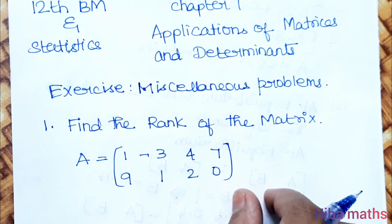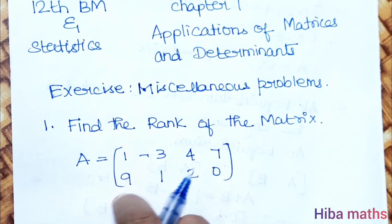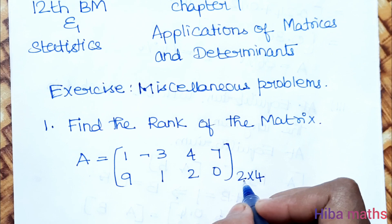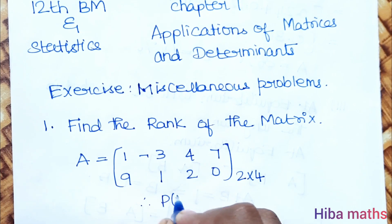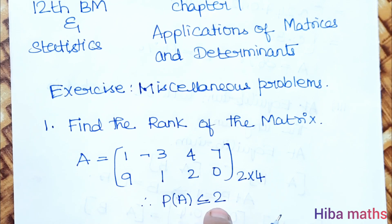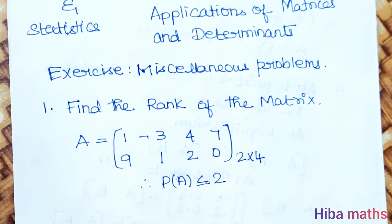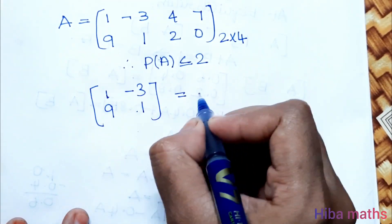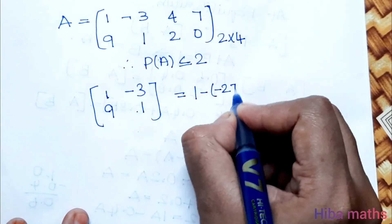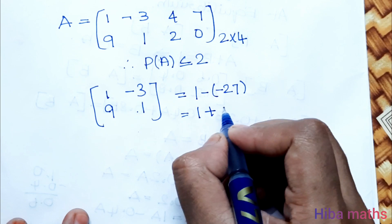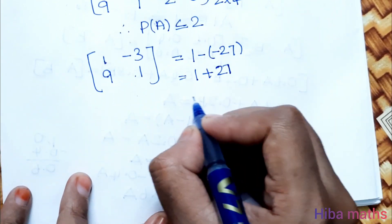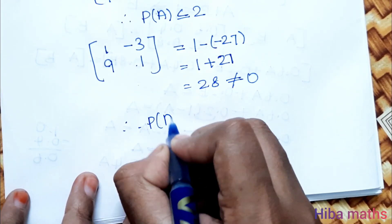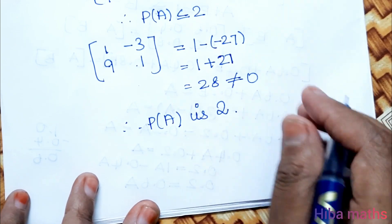The matrix order is 2 rows by 4 columns, so rank of A is less than or equal to 2. We check the 2×2 submatrix [1, -3; -9, -1]. The determinant is 1×(-1) minus (-9)×(-3) = -1 - 27 = -28, which is not equal to 0. Therefore, the rank of matrix A is 2.